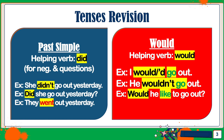Now we're going to take a look at WOULD. The helping verb is WOULD. So an example would be 'I would' or 'I'd go out.' 'He wouldn't go out' — that's a negative — or 'He would not go out,' a negative sentence. And for a question: 'Would he like to go out?' Notice the verb is the base form, no change. That's easy — a piece of cake.